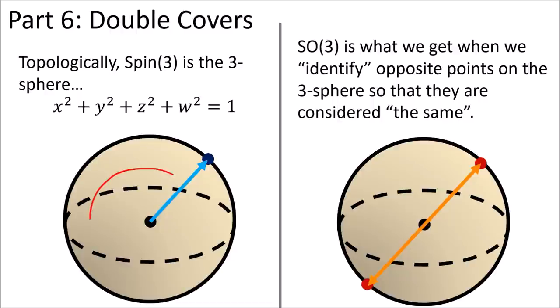This is why a half turn in the spin group is like a full turn in the rotation group because the rotation group can't tell the difference between opposite sides of the sphere.